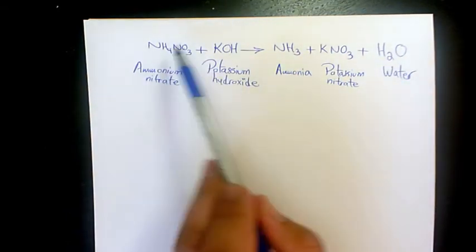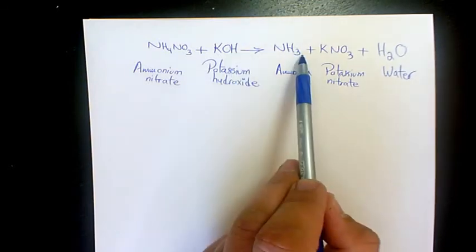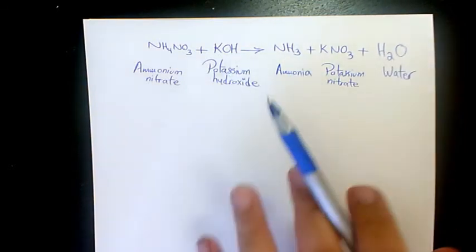For hydrogen, we have four and one, that's five. And here we have three and two, which is five as well.